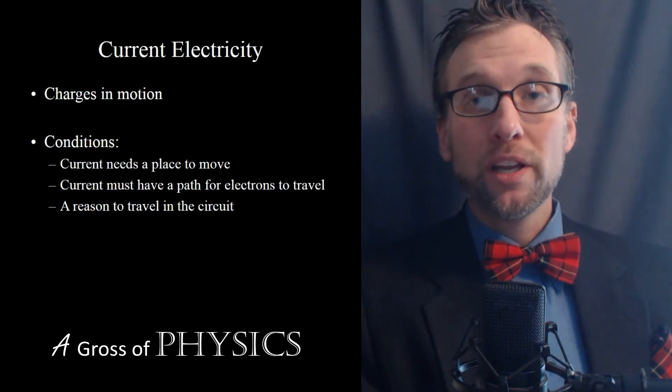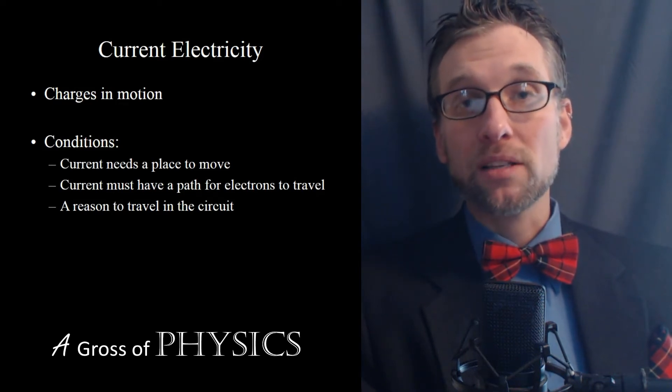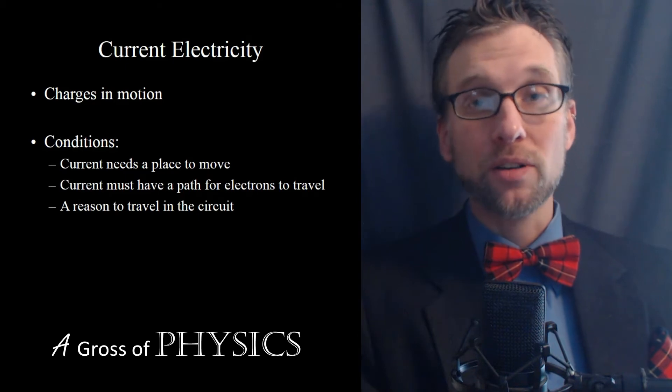Now current is moving charges, so we're going to have the flow of electrons through whatever we have set up. It could be a light bulb, it could be just a resistor, or it could be something more complex like a toaster oven or a coffee pot or something like that.